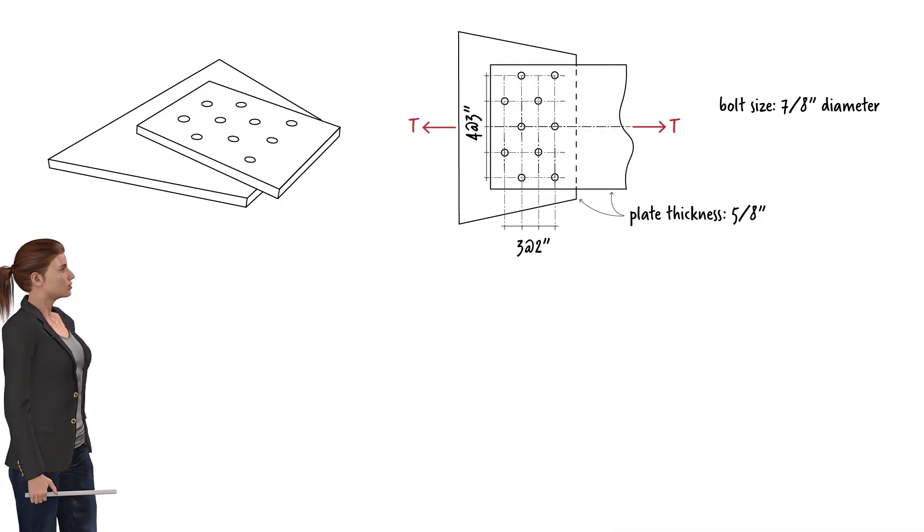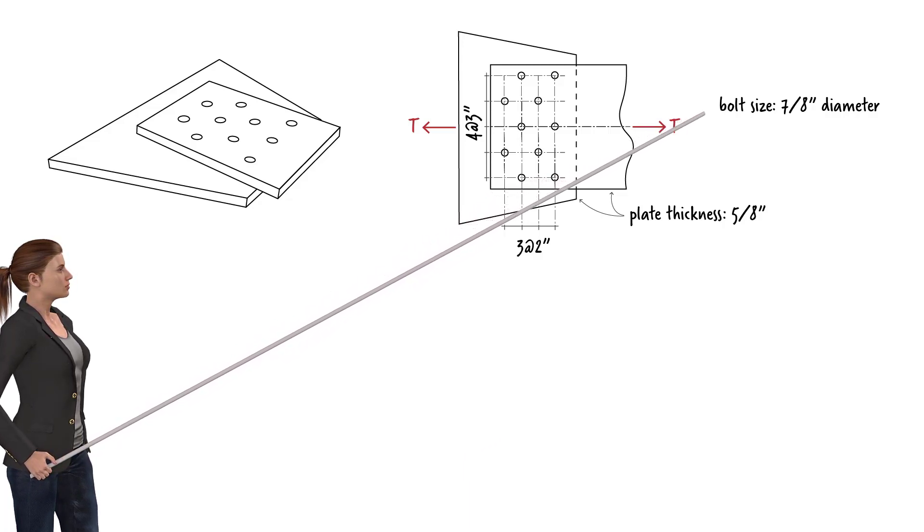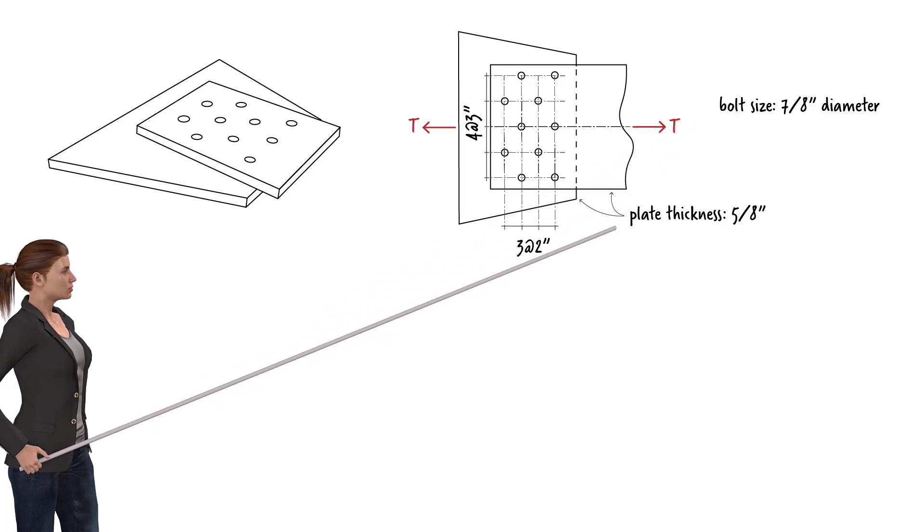Suppose a tension member's connection to a gusset plate consists of 10 bolts, staggered with the spacings shown here. The standard holes are made for 7/8 inch diameter bolts, and the thickness of each plate is 5/8 of an inch.